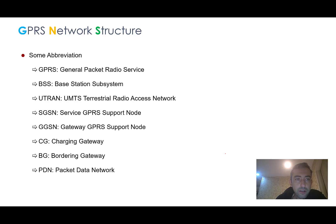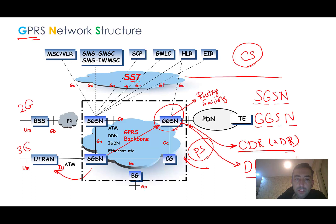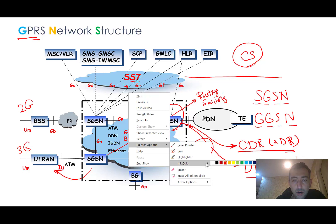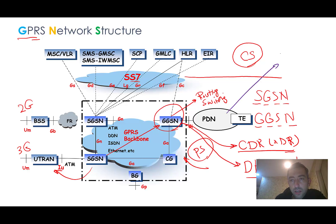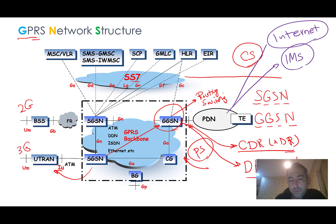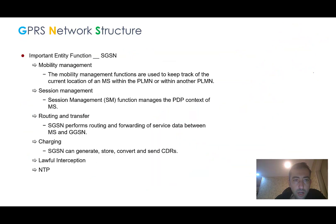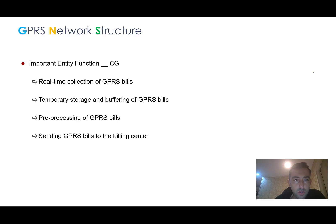Here are some abbreviations: GPRS — General Packet Radio Service; BSS — Base Station Subsystem; UTRAN — related to 3G network; SGSN — Serving GPRS Support Node; GGSN — Gateway GPRS Support Node; CG — Charging Gateway; BG — Border Gateway; and PDN — Packet Data Network. PDN is not just the internet — it can also be other data networks like IMS (IP Multimedia System) or any other data network, though the internet is the most commonly used.